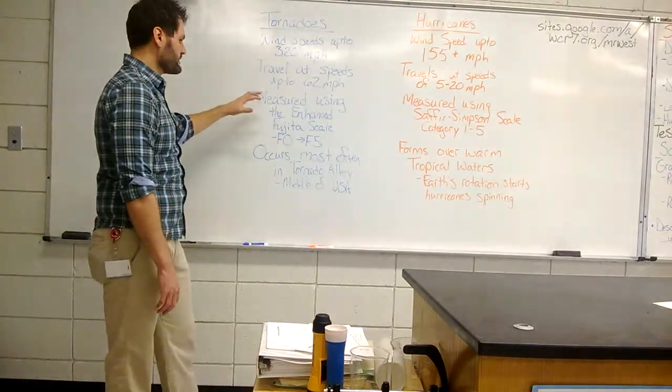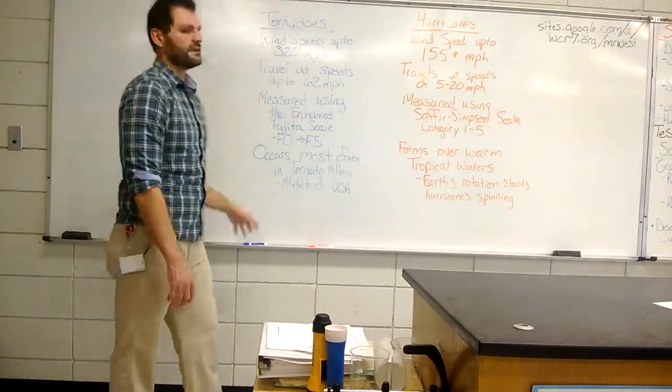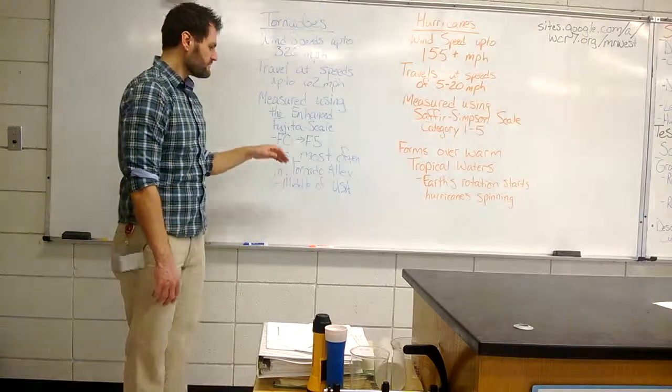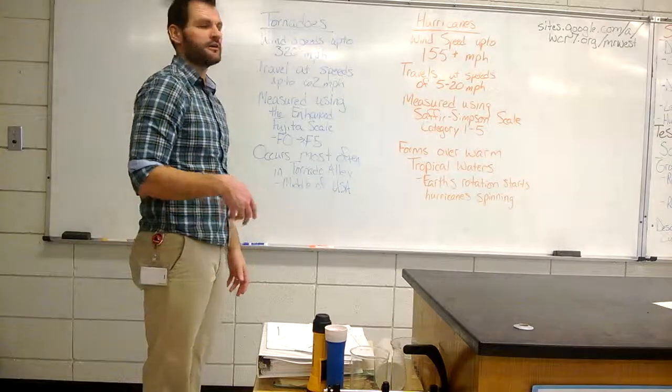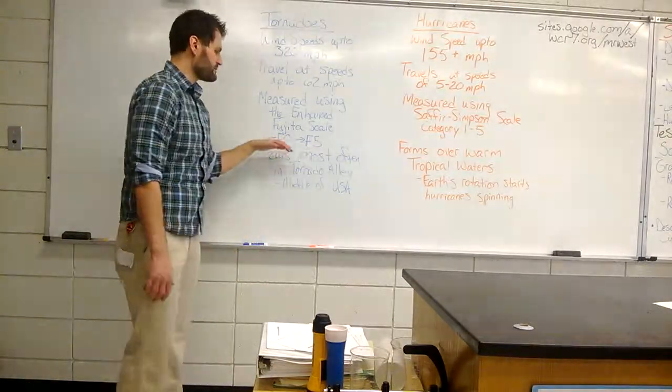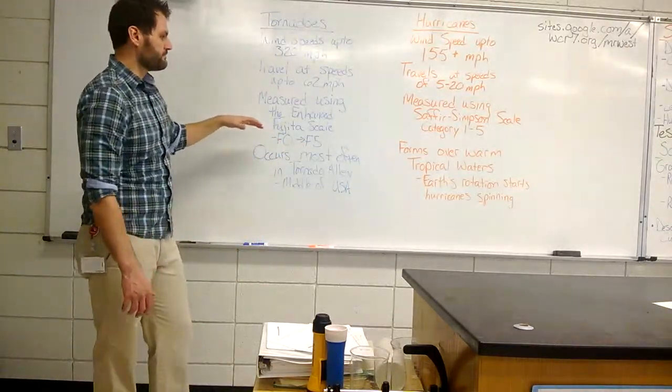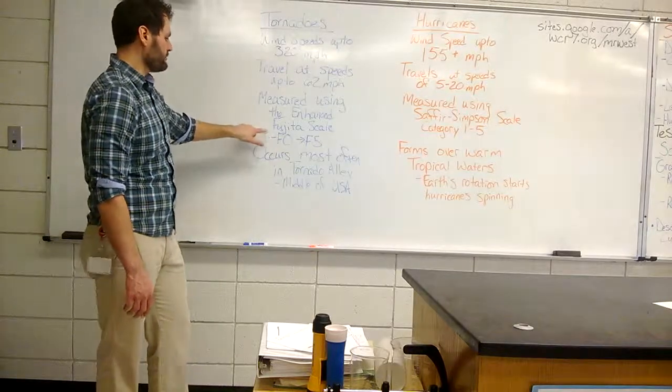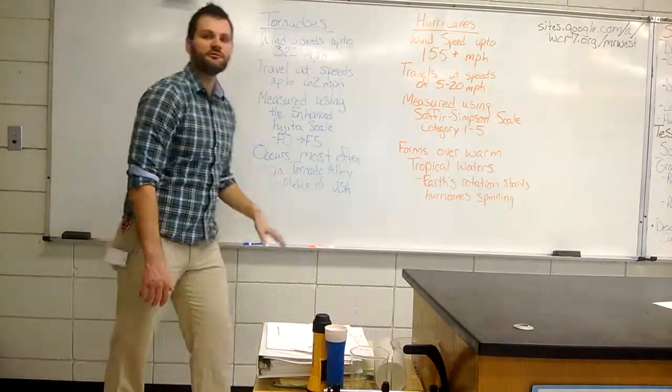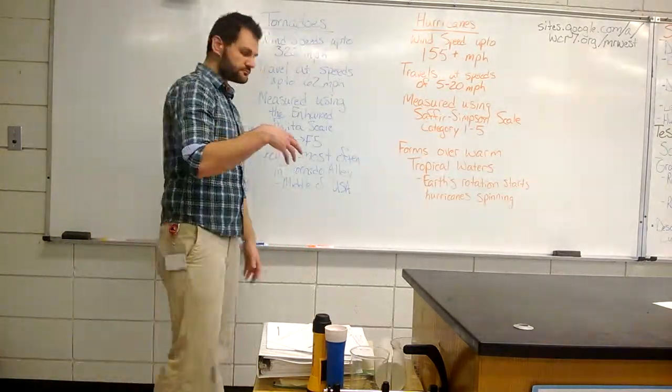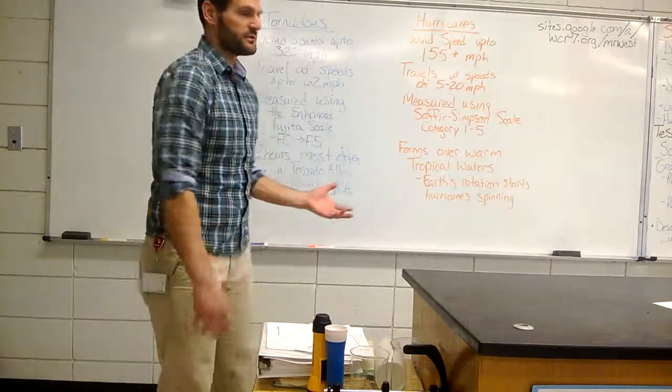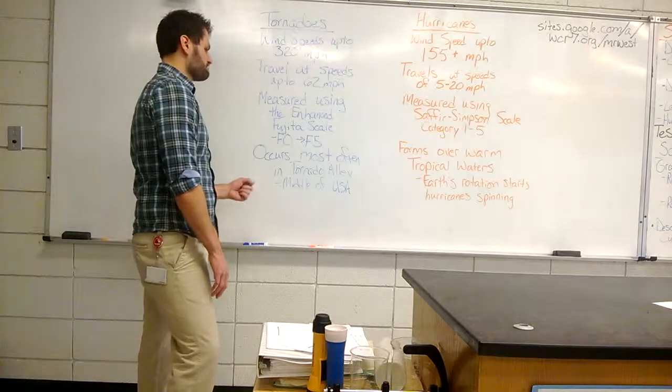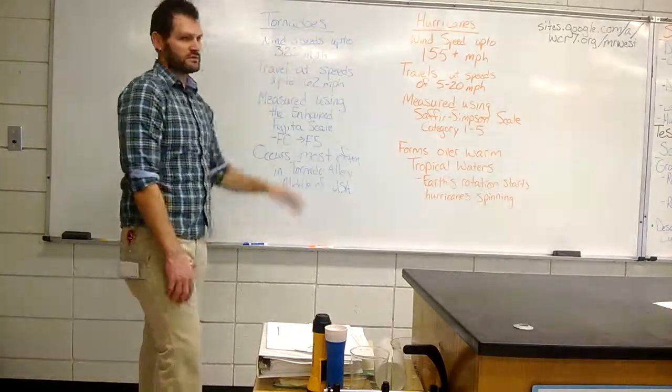We talked about tornadoes are measured using the enhanced Fujita scale. We often refer to a tornado as like an EF1 or EF2. EF5 tornadoes would be the biggest tornadoes with the highest wind speeds and kind of the most deadly.